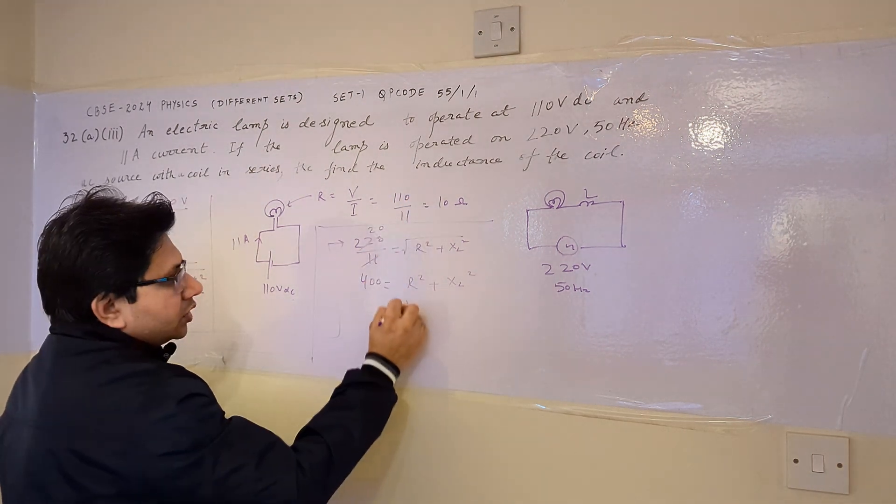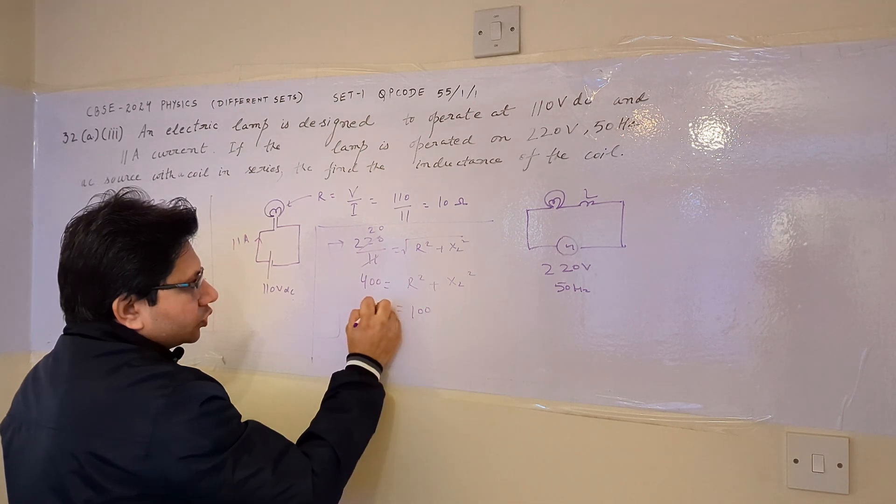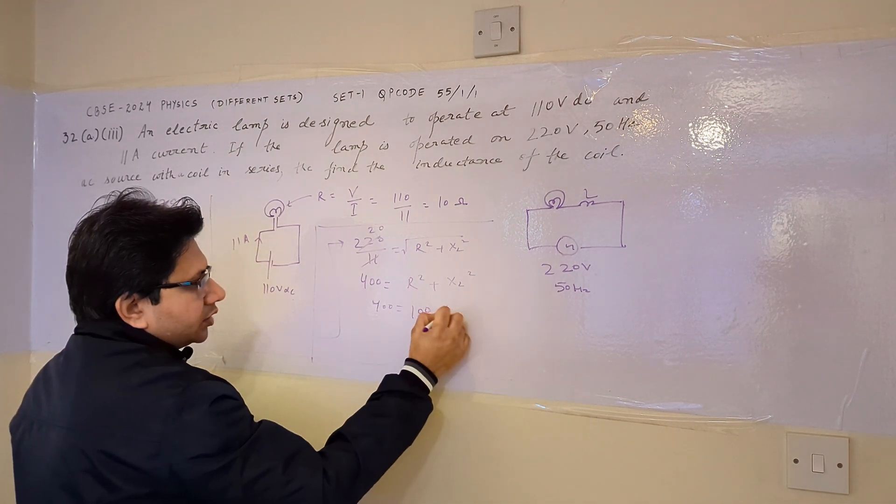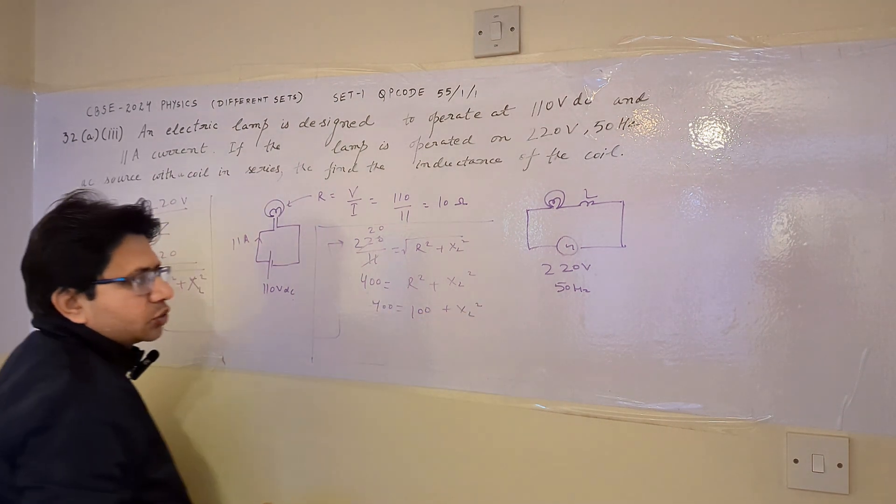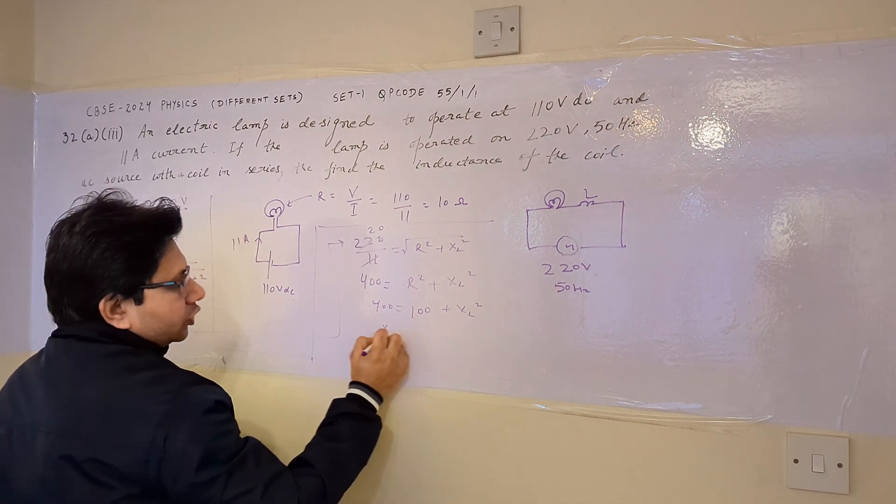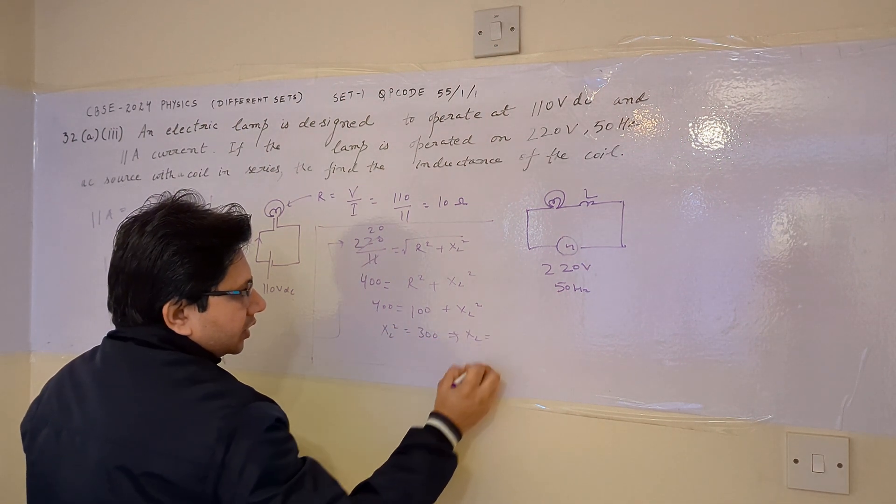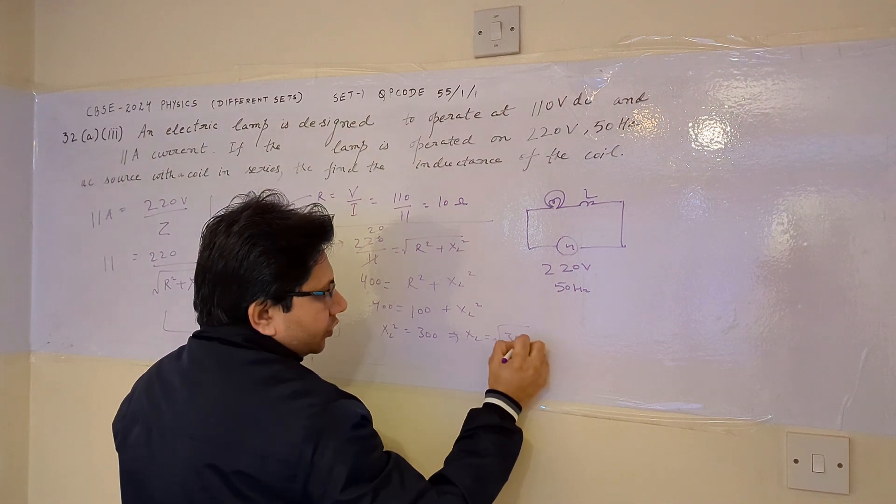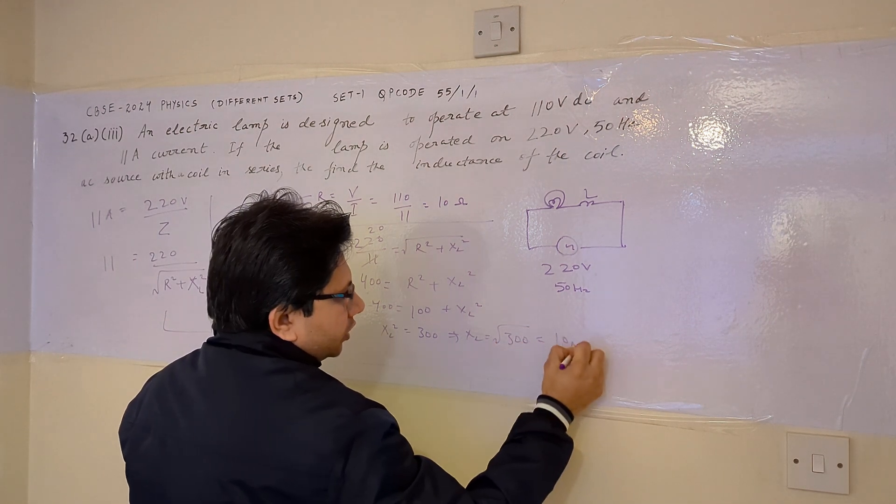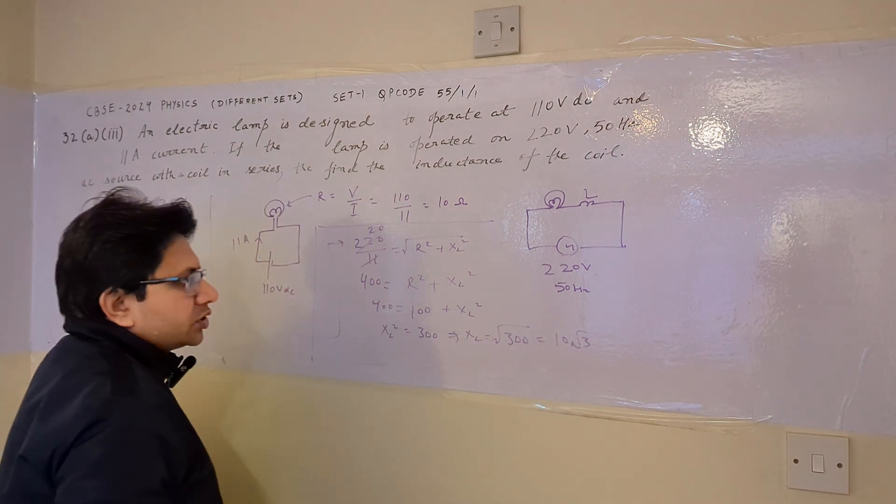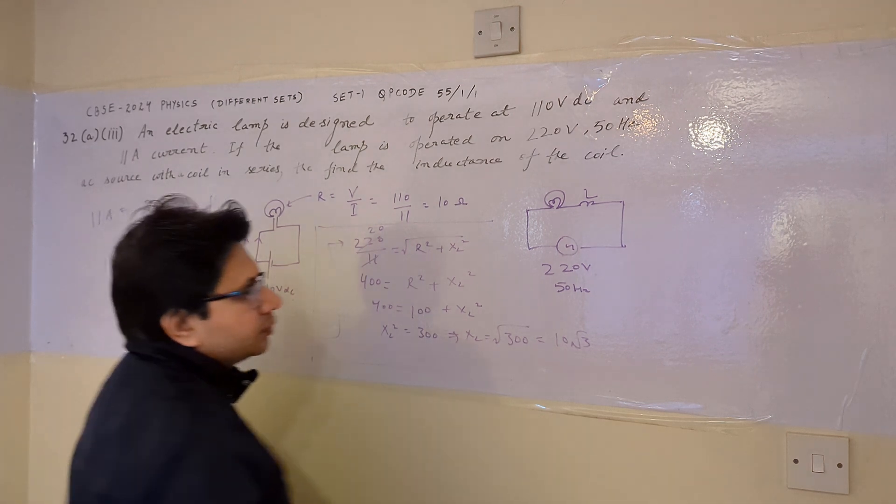Squaring both sides, we get 400 equals R square plus XL square. Now R is 10, which we calculated earlier. So the square of 10 is 100. So 400 equals 100 plus XL square. From this, we get the value of XL square as 300, or we can say that XL is square root of 300, which equals 10 root 3. So this is the value of the inductive reactance.